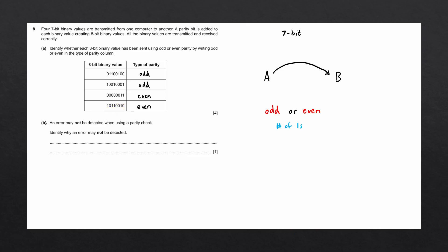Question B says an error may not be detected when using a parity check. Identify why an error may not be detected. When we're speaking about detecting an error, we're speaking about the process that happens at B, when we're checking the parity of the bits. If all we're doing is checking the number of ones, there are a number of things that we could miss.